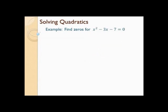Hi there, it's me, Mr. B. Let's find the zeros for x squared minus 3x minus 7. I can't factor this quadratic, and I also can't use the square root method because it has an x term in the middle. I could graph it, but let's solve it using the quadratic formula. It's already in standard form. So a equals 1, b is negative 3, c is negative 7.